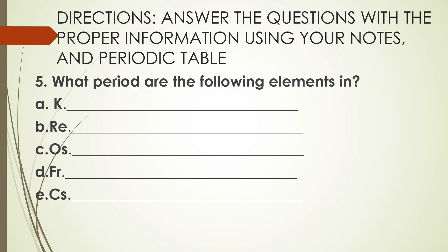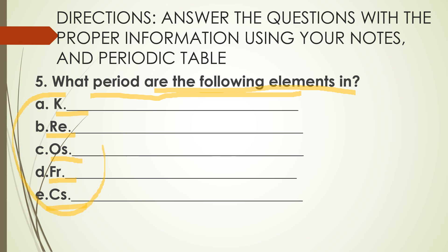Number five: what period are the following elements in? What period is potassium in? What period is Re in? What period is Os in? What period is Fr in? What period is Cs in? Find these in your periodic table — which period do they belong to?